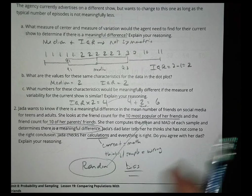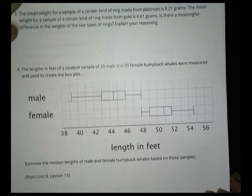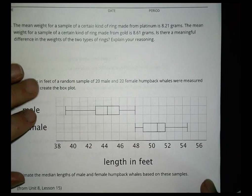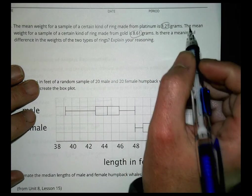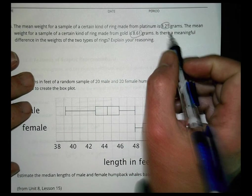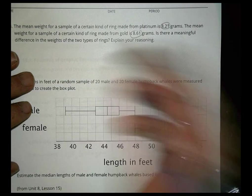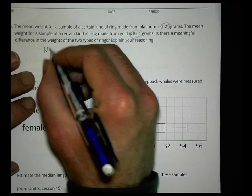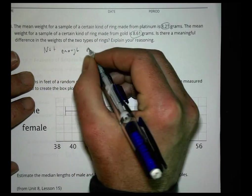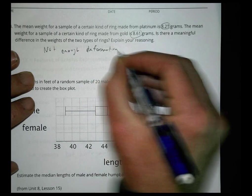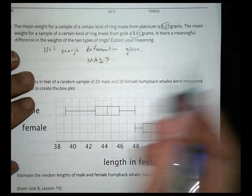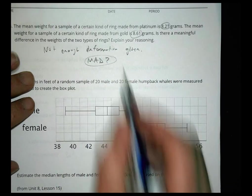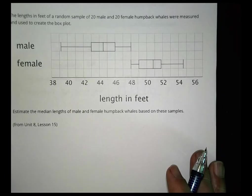Question 3: A platinum ring sample has a mean weight of 8.21 grams and a gold ring sample has a mean weight of 8.61 grams. Is there a meaningful difference? There's not enough information — we don't know the mean absolute deviation, so we can't compare the means to determine a meaningful difference.